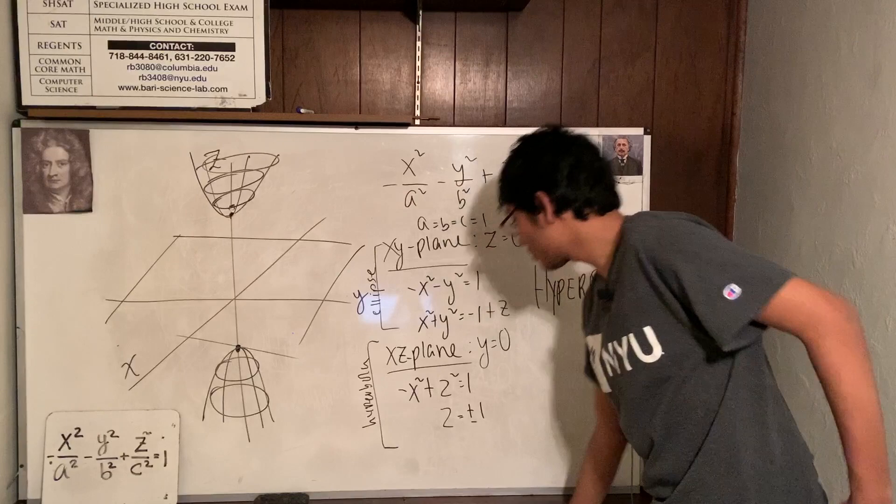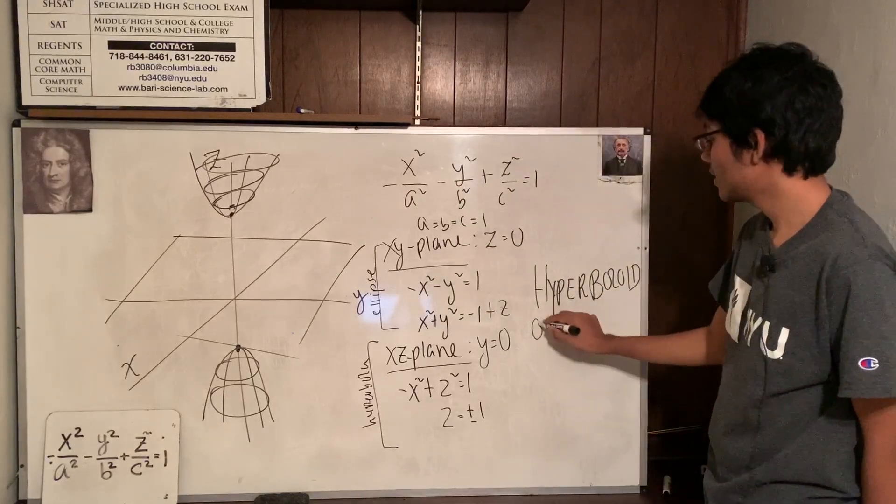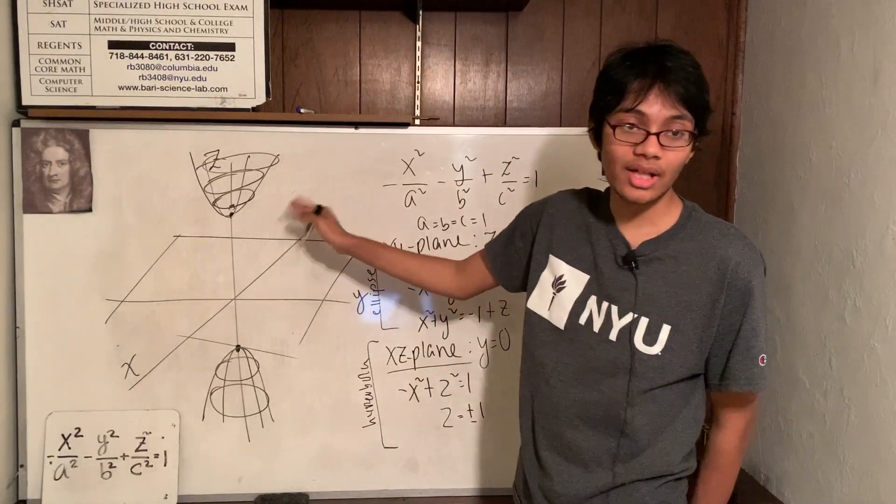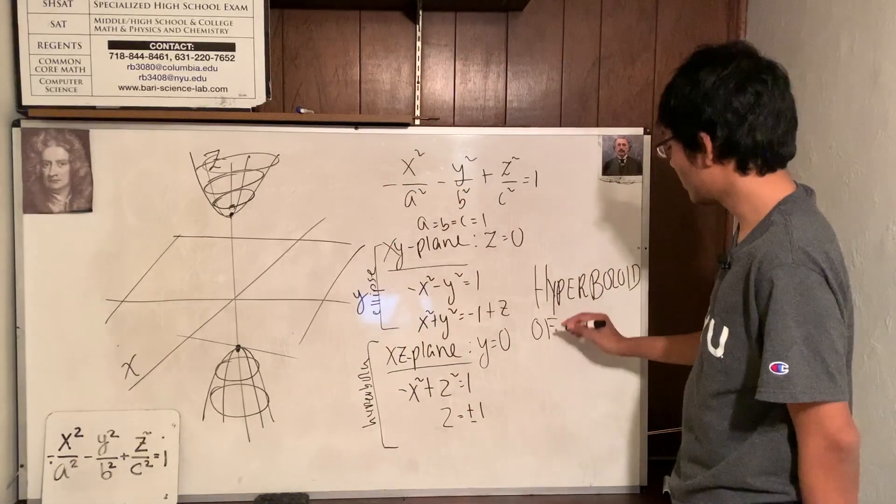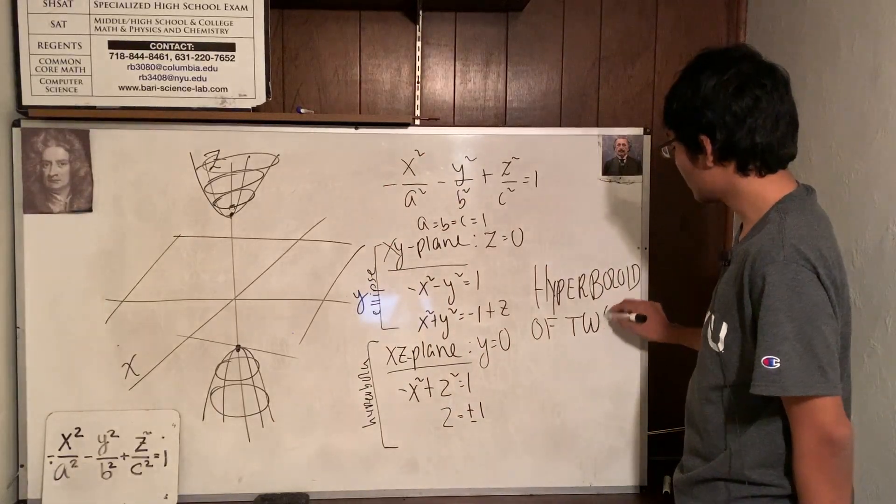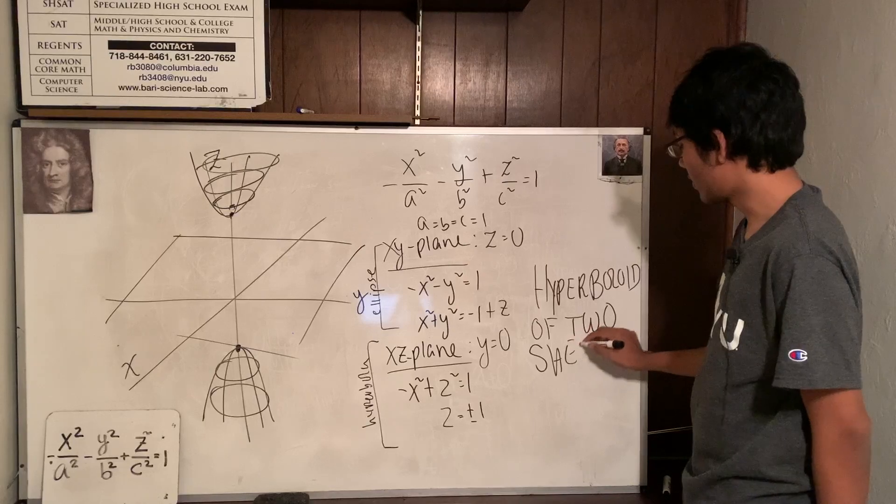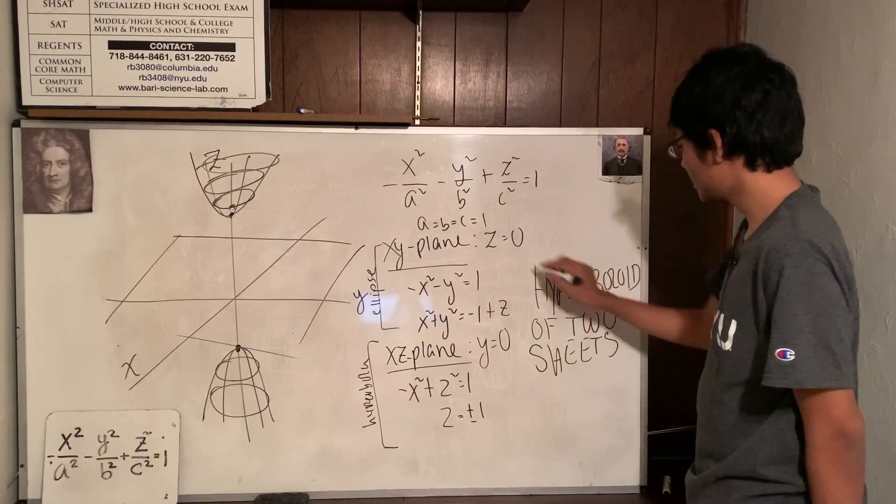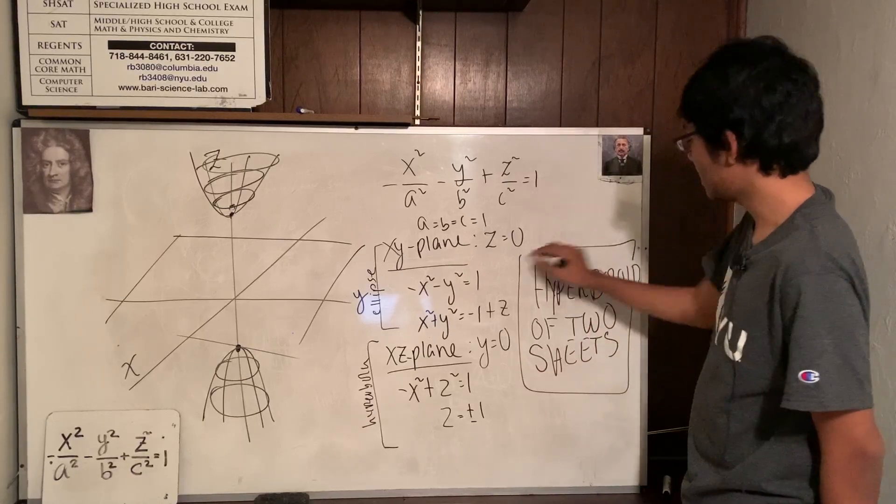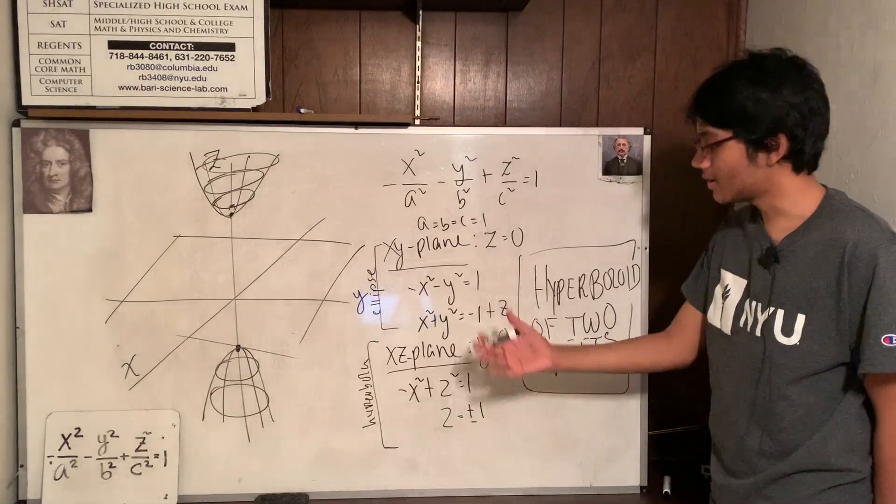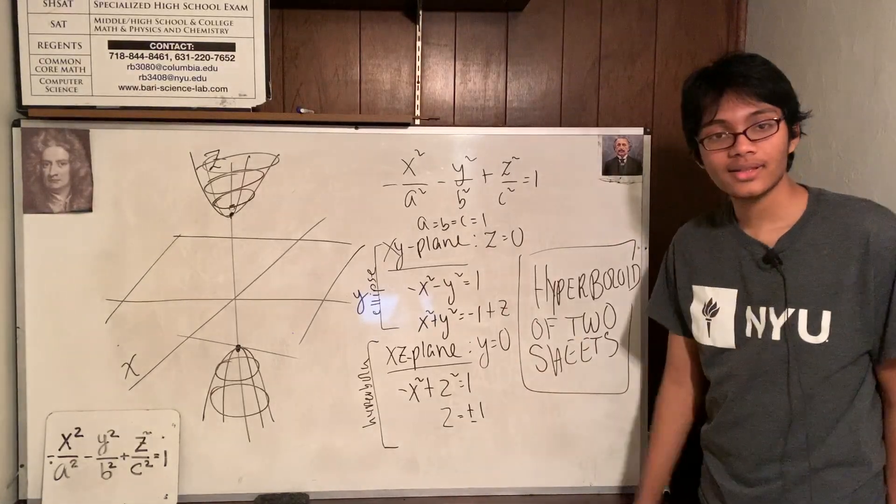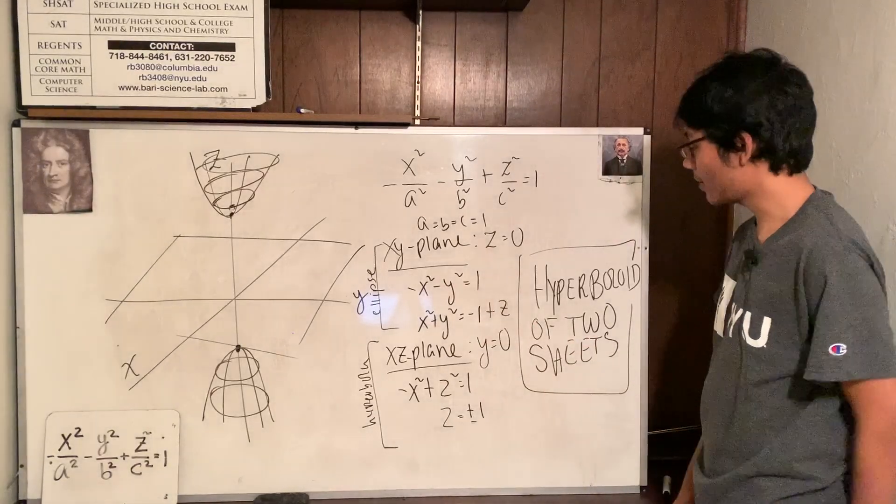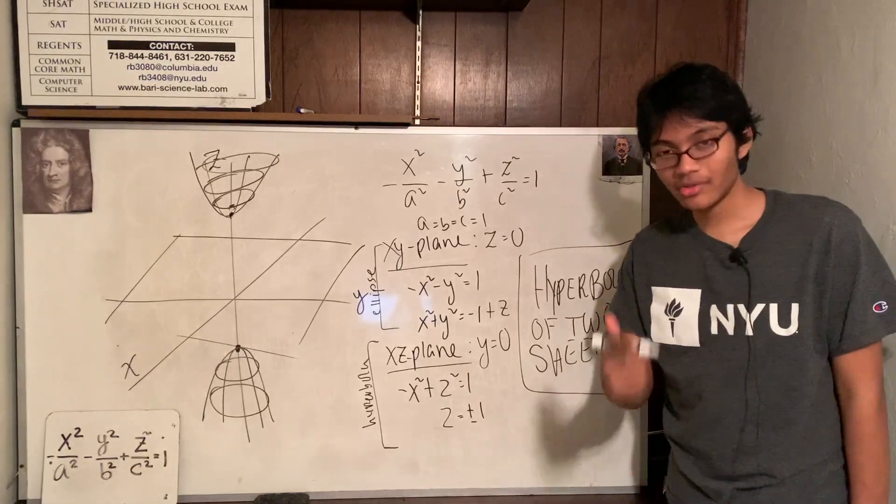But, you see, there's a ghost town in the middle. And you've got two things. Two bowls. So, we call it a hyperboloid of two sheets. Hyperboloid of two sheets. And that, ladies and gentlemen, is our last quadric surface. The two bowls and the hyperboloid of two sheets. We'll check you out next time.